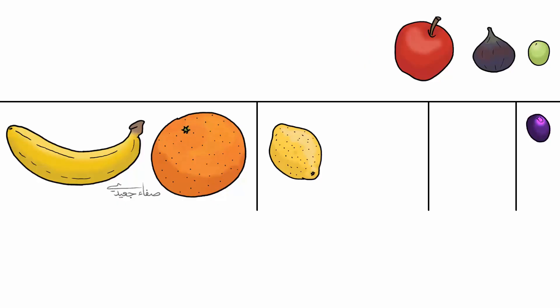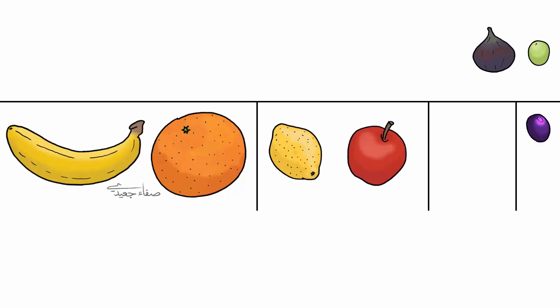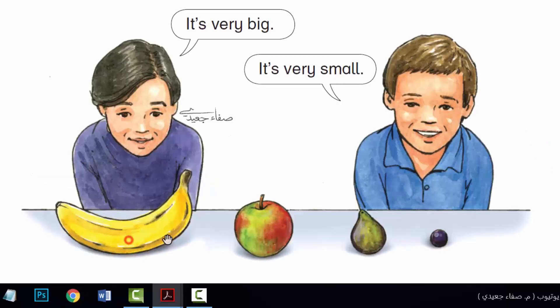Apple. It's big. Fig. It's small. Olive. It's very small. The banana is very big. The apple is big. The fig is small. The grape is very small.